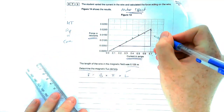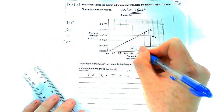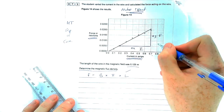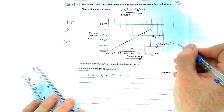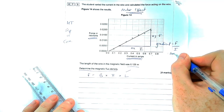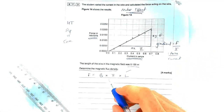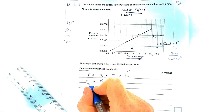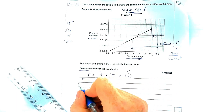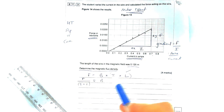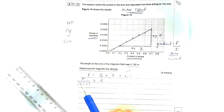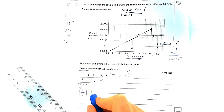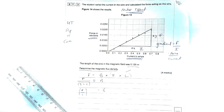If I rearrange the equation for flux density, I've got force on top and current on the bottom. So force divided by current gives the gradient. All I need to do is then factor in the value for the length of wire, and that gives me the magnetic flux density. Let's work out the gradient: the change in y is 0.021 minus 0.005, and the change in x is 0.7 minus 0.18. Putting that into a calculator gives 0.307.